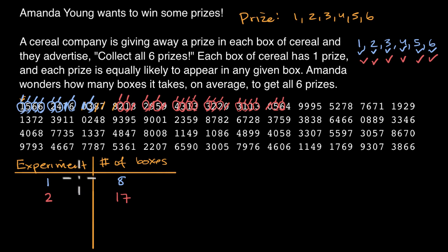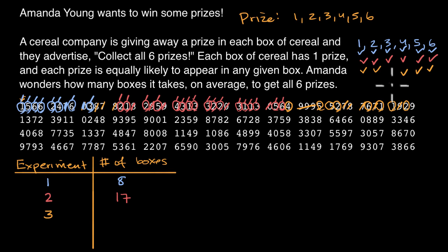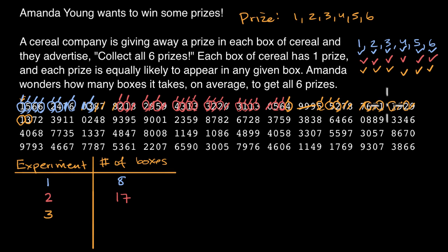Let's do this one more time. In experiment three, we only look at valid numbers and ignore invalid ones. We get prize four, then — after several invalid numbers — prize five. Another five is already collected. Then prize two. Seven and eight are invalid. Then prize six. Seven is invalid. Then prize one. One again — already have it. Nine is invalid. Two — already have it. Nine is invalid. One — already have it. And finally prize three, which was the missing prize. Counting valid boxes: ten boxes in experiment three.